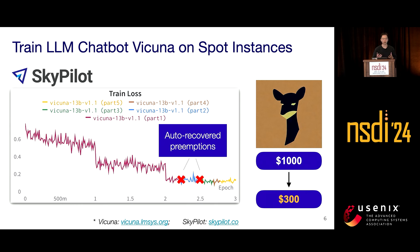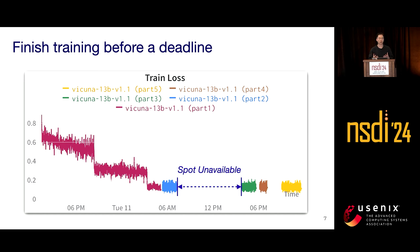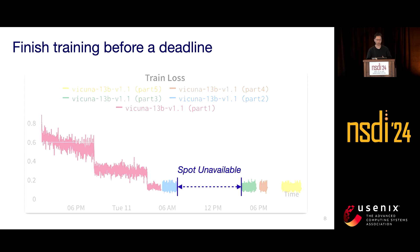This looks like a great amount of savings, but some of you may have already noticed: what if spot instances are unavailable during some period, and our job makes no progress? This is a problem we actually encountered. When we change the x-axis from number of epochs to wall time, we can observe big gaps between different spot instances, meaning the spot resources are just unavailable during that period. That caused the job to make no progress, and this unavailability issue has become more prevalent due to the GPU shortage.